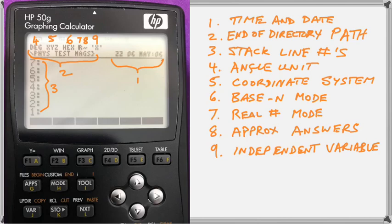Then we have the base-n mode, which is hexadecimal hex for short. Then we have the real number mode. You'll either see a real or a big C. The calculator allows for a real number mode which restricts you and will not show complex solutions.